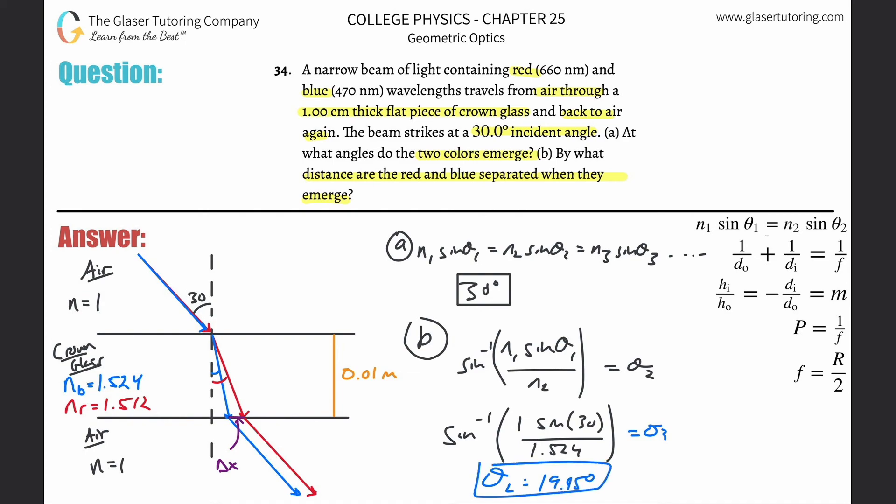Now we're going to do the same thing for red, but the only difference is we're going to change the number down here. So this is 1.512 now. Just do the same calculation: inverse sine of sine of 30 divided by 1.512, and it works out to be 19. So theta 2 for the red is now 19.31, this is 1.5 by the way.